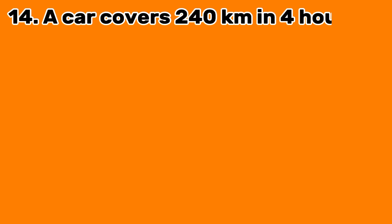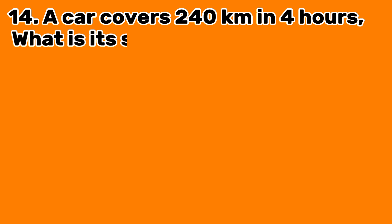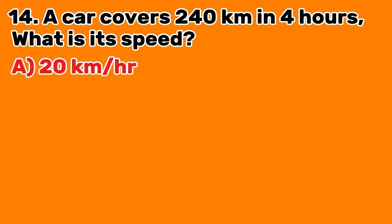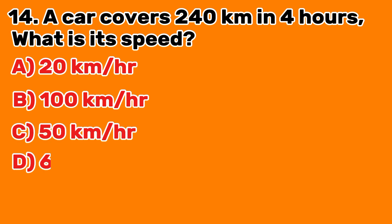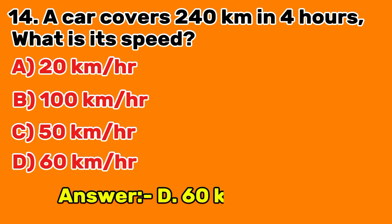Question 14: A car covers 240 kilometers in 4 hours. What is its speed? A. 20 kilometers per hour. B. 100 kilometers per hour. C. 50 kilometers per hour. D. 60 kilometers per hour. Answer D: 60 kilometers per hour.